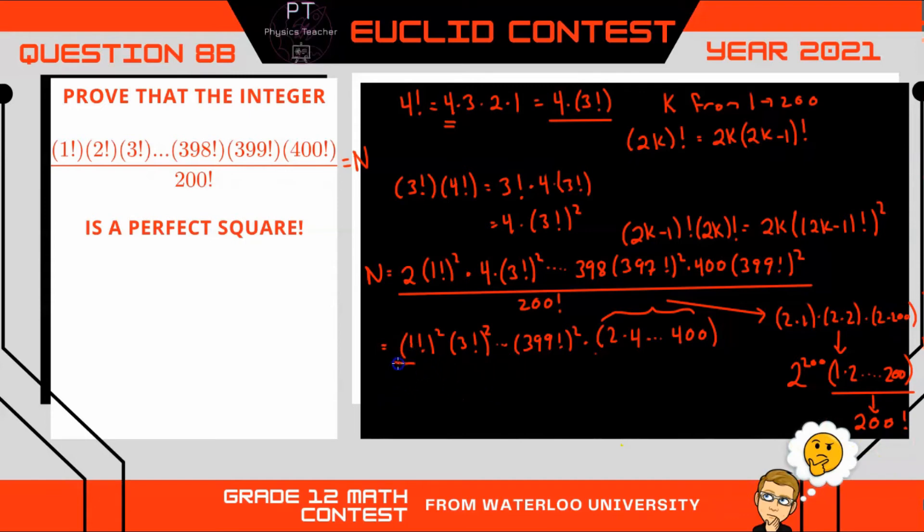So what this reduces to then, we have 200 factorial, what this reduces to is we have all of our odd factorials here. 1 factorial, 3 factorial, squared, all the way up to 399 factorial squared. And then we have times 2 to the 200, and times by 200 factorial. And that is all over 200 factorial. So the 200 factorial is going to cancel.